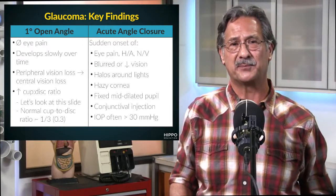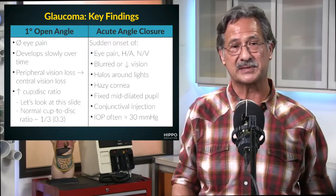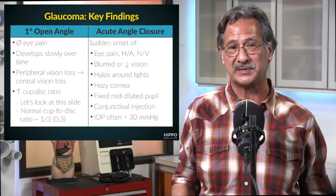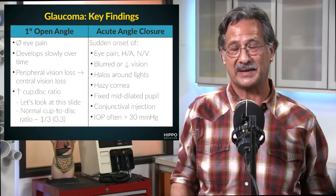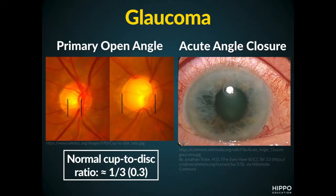In primary open-angle glaucoma, we see no eye pain. This is a condition that develops slowly over time. We start with peripheral vision loss and eventually move to central vision loss. One of the classic physical exam findings is an increase in cup-to-disc ratio. On the left-hand side you'll see two images showing the cup and the disc — a normal cup-to-disc ratio versus a large cup-to-disc ratio on the right. Normally, that ratio is about one-third or 0.3.